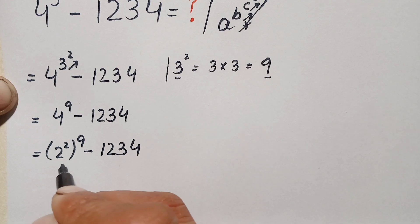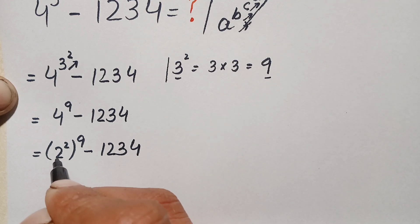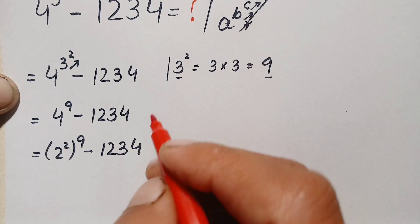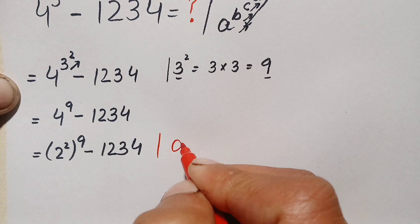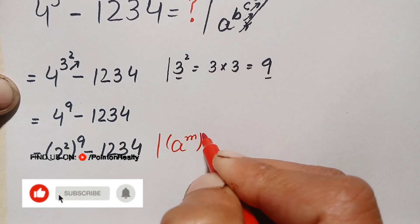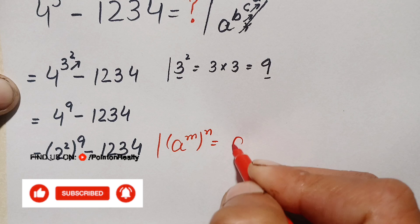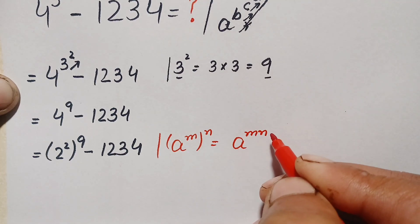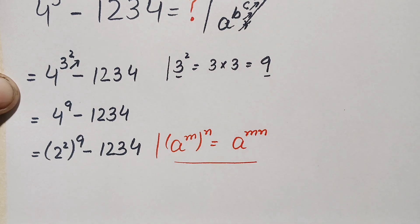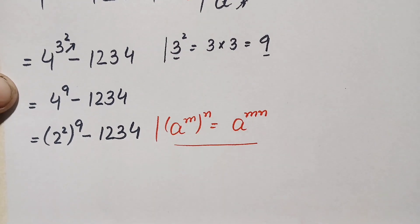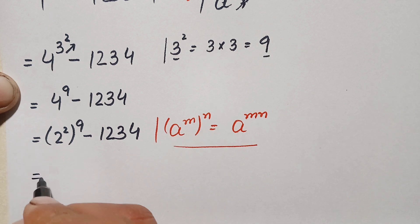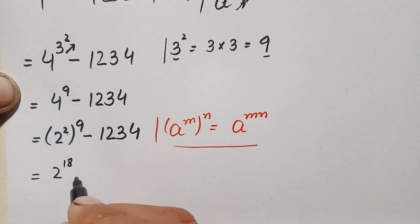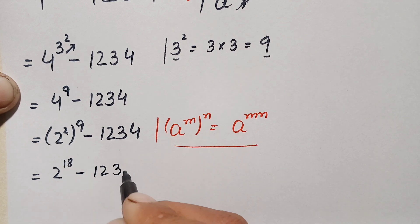In this step we will use the exponential identity: r raised to power m, raised to power n, can also be written as r raised to the product of the powers, r raised to power m times n. Using this identity, we can write this number as 2 raised to power 2 times 9, which is 18, minus 1234.